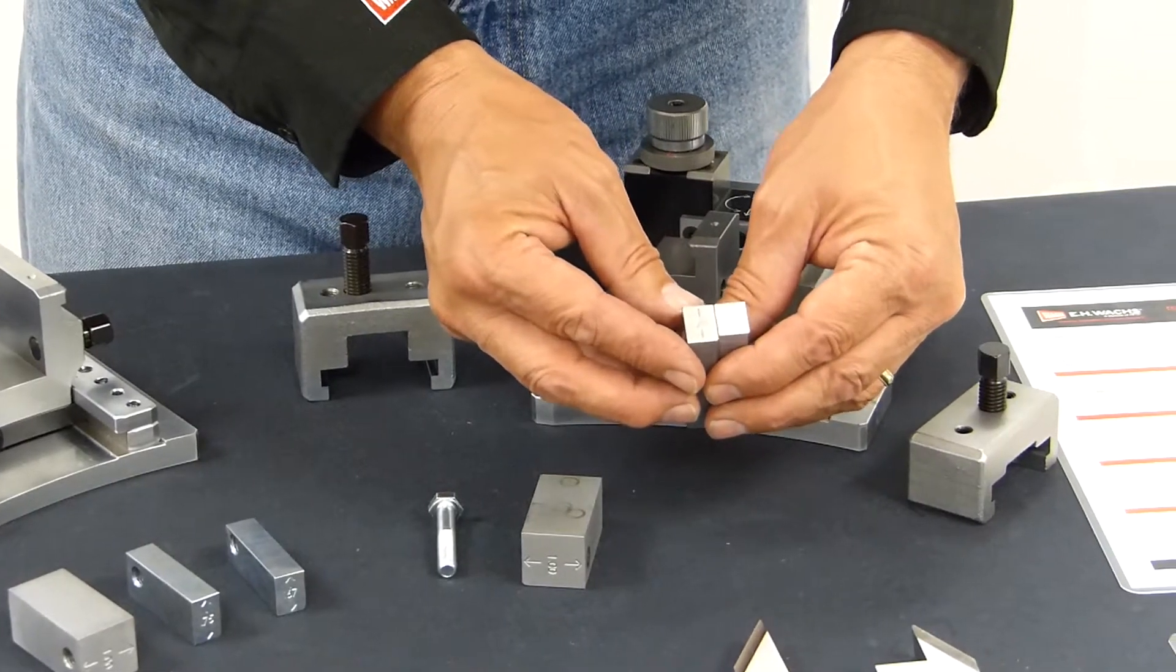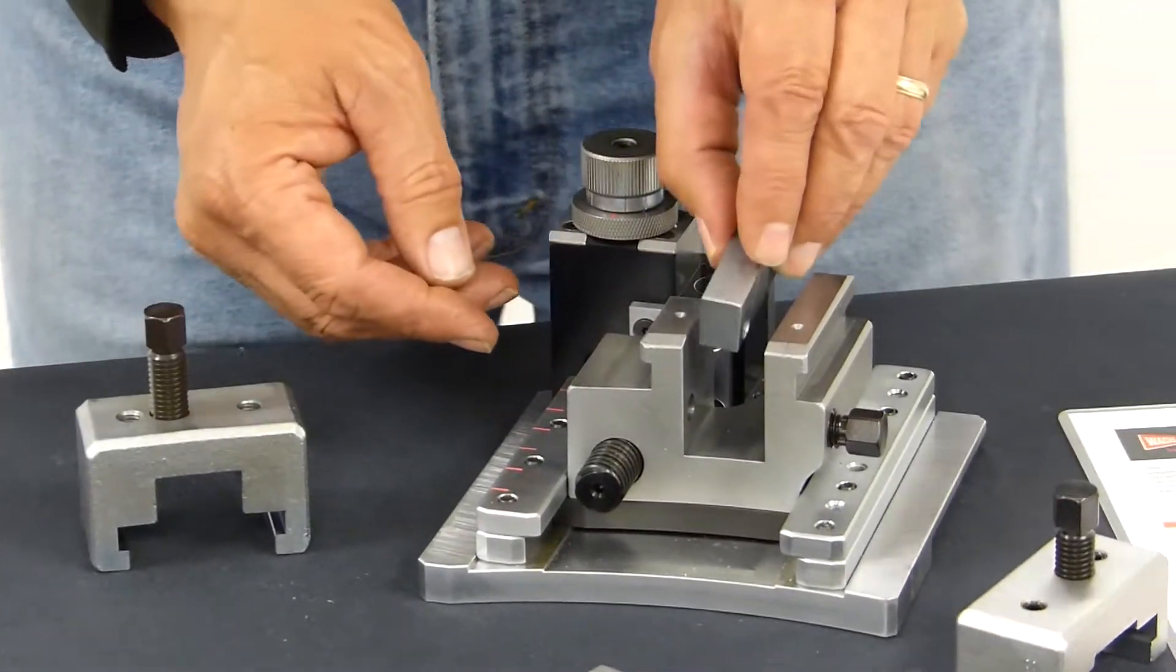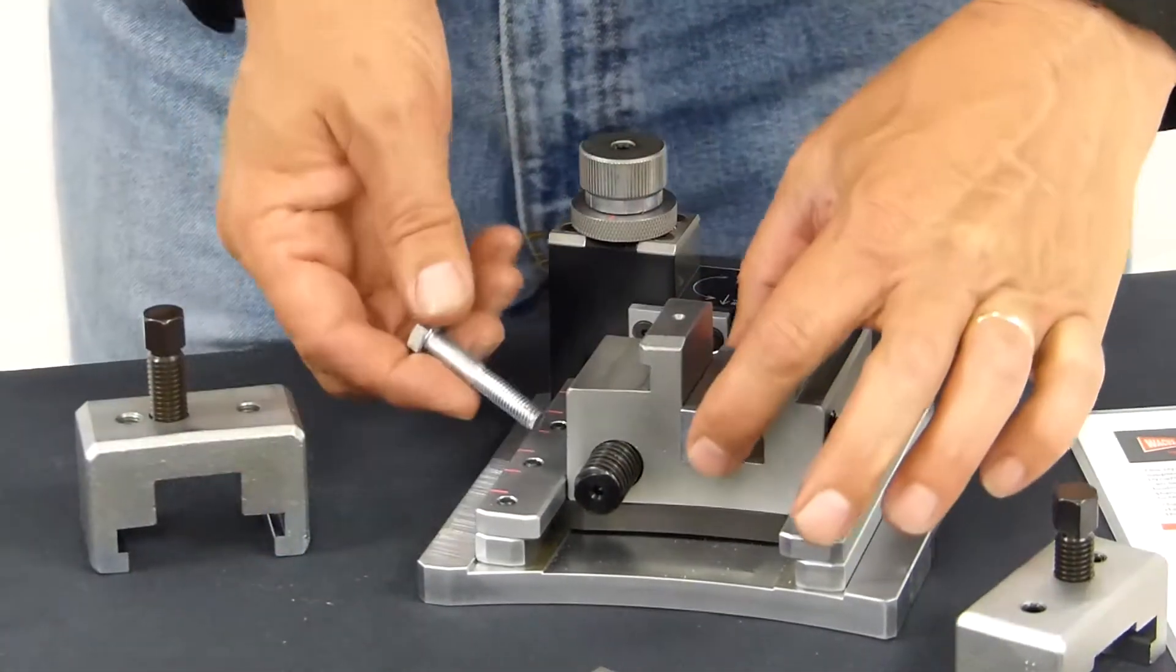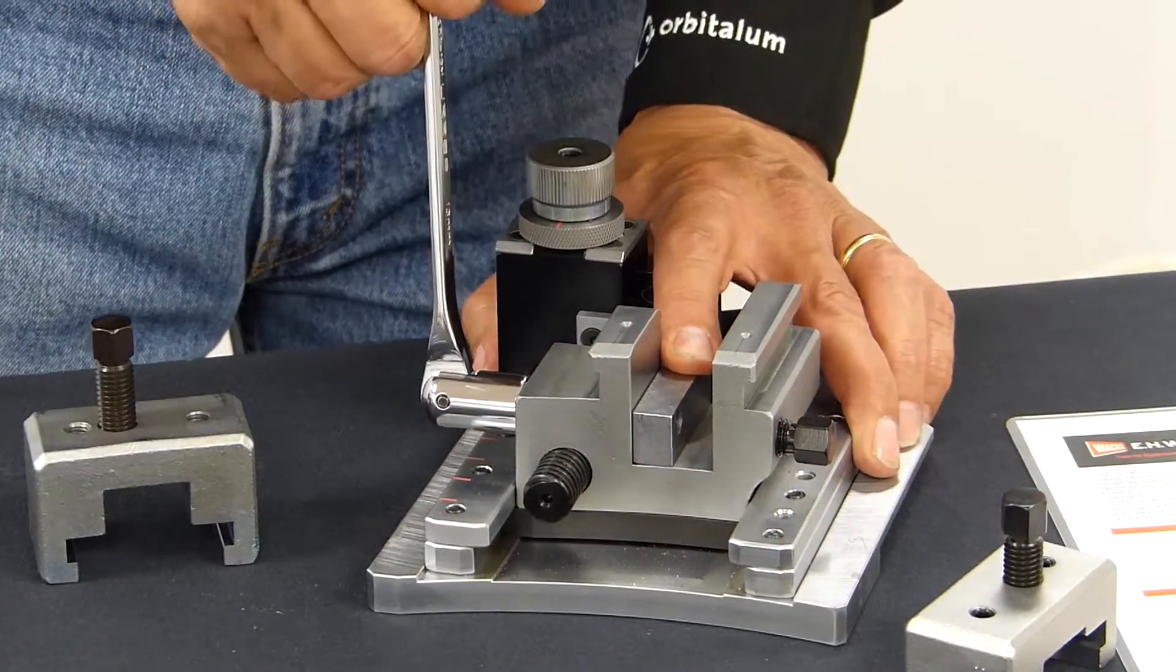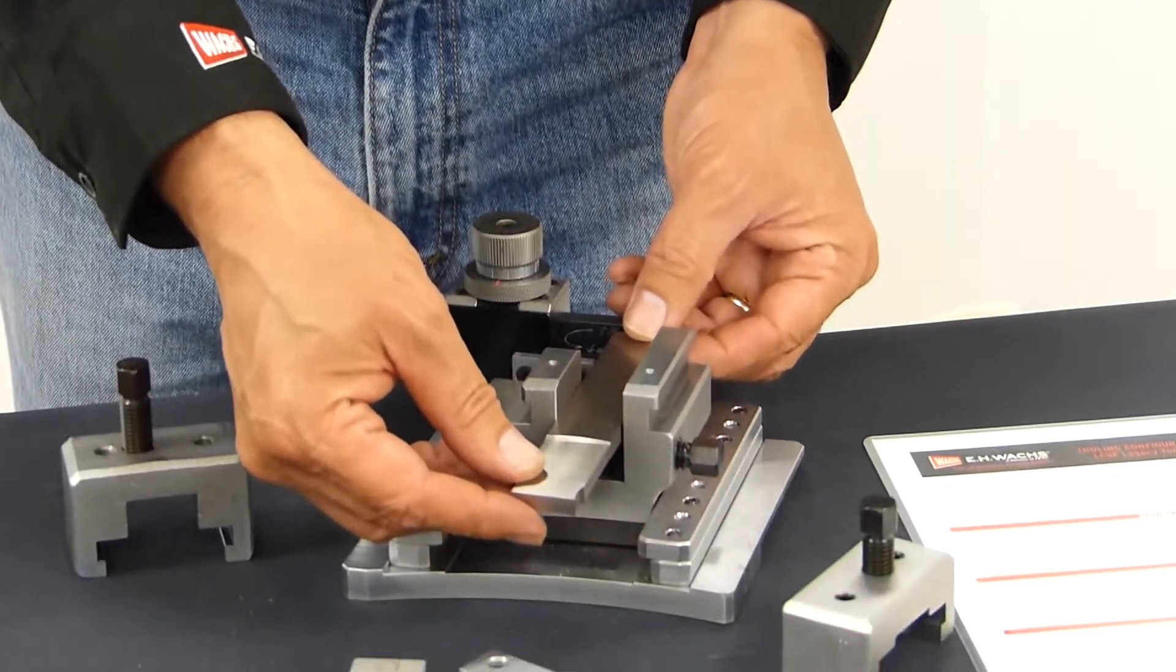The two heights allow me to set one parting blade at 670 thousandths. Place that in here, secure it with the screw. Take your parting blade, place it.